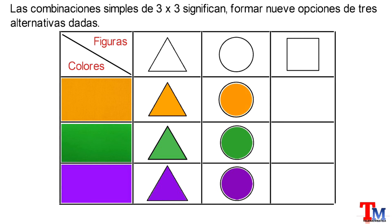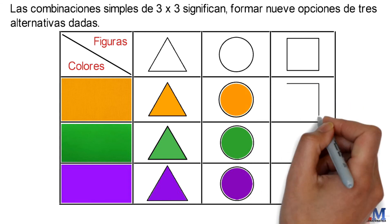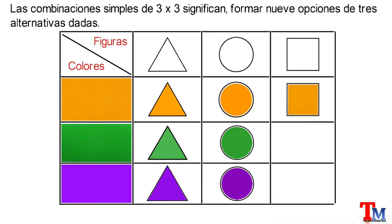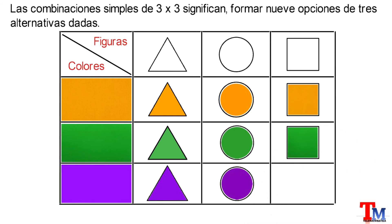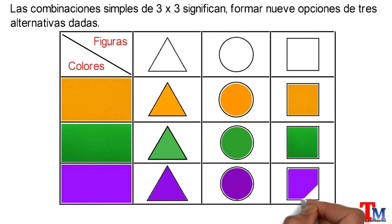Y en la última columna, combinando el color amarillo con el triángulo obtenemos... Combinando el color verde con el triángulo obtenemos... Y de esta forma se define la combinación simple de 3x3.